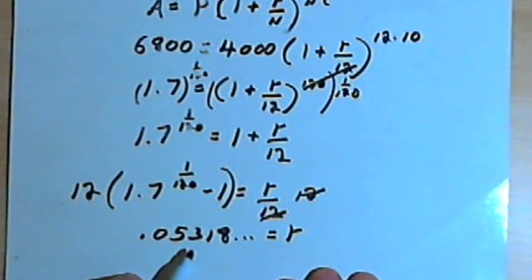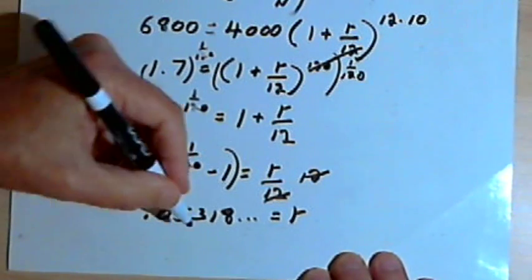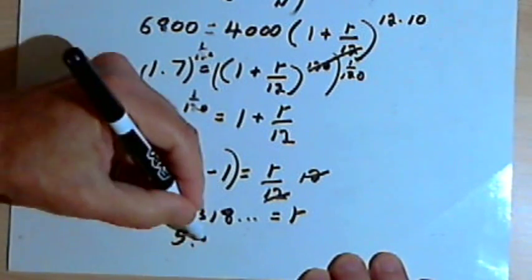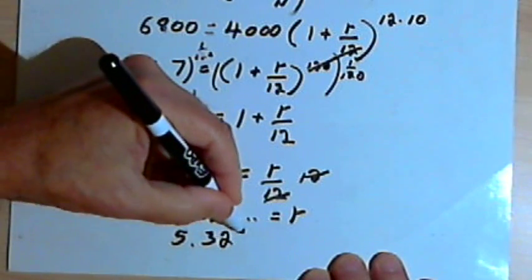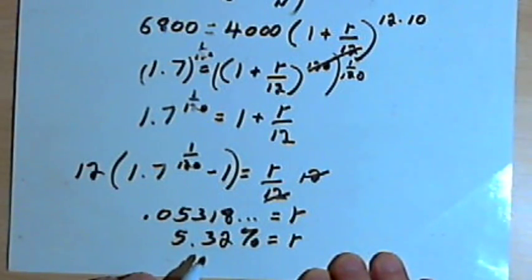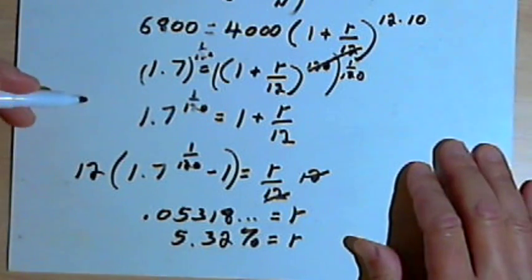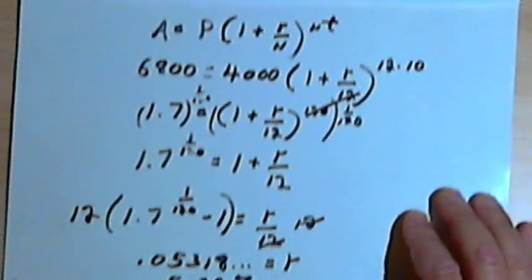We'll turn this into a percentage and we'll round it. So it's going to be 5.32 percent. So that's the rate. And this is a little bit lower than what we got the last time, the last time was 5.45, which makes sense because we're compounding it more frequently.